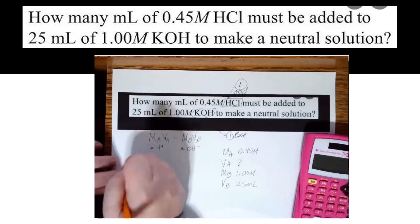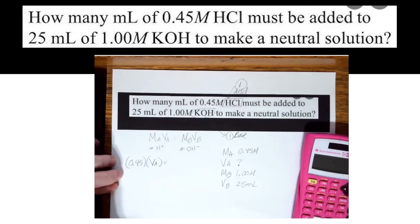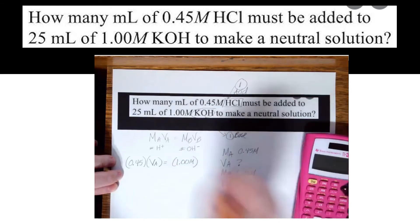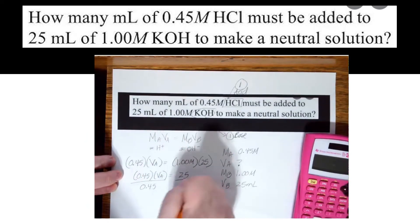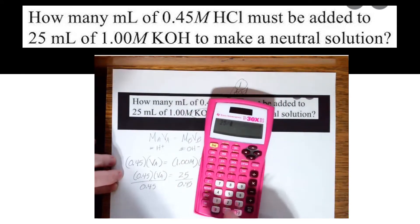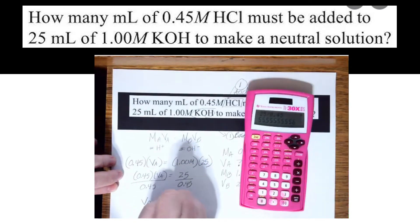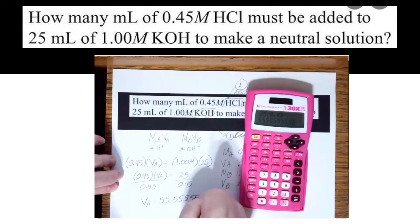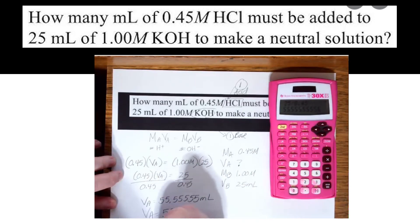So let's solve. So MA, 0.45. VA is what I don't know. So I'm going to leave it as VA. MB, 1.00 molar. And 25 milliliters. Multiply these together. This is 25. Now to solve, I'm going to divide both sides by 0.45. So let's do 25 divided by 0.45 equals 55.55.